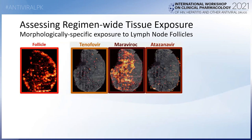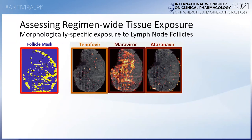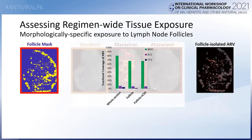We can bring in other information captured during data acquisition to look at morphologically specific exposure. Using an endogenous lipid marker identified to be preferentially expressed in the follicles of the lymph node, it's possible to create a mask that can be applied to drug distributions in order to isolate drug exposure specifically to these regions and compare regional exposure both to the tissue section as a whole as well as to inhibitory concentrations.